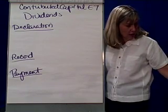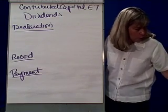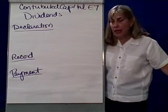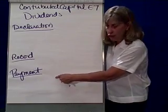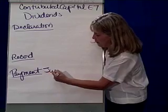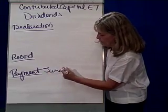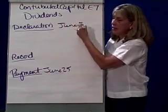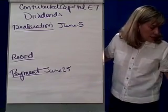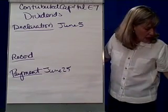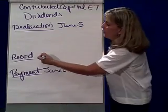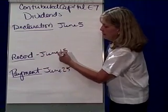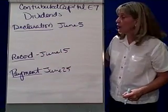On June 5th, the board of directors declared a 50 cents per share cash dividend to be paid on June 25th. So June 5th is the date of declaration, June 15th is the date of record, and June 25th is the date of payment.